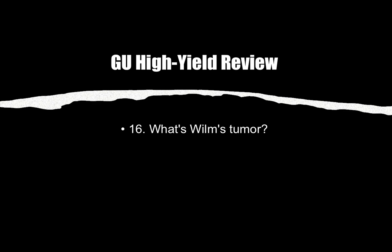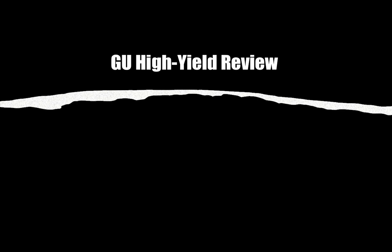Number sixteen: What is Wilms' tumor? Wilms' tumor is a unilateral renal mass seen in children. It is the most common kidney tumor in children. So: unilateral renal mass in a kid — think Wilms' tumor.